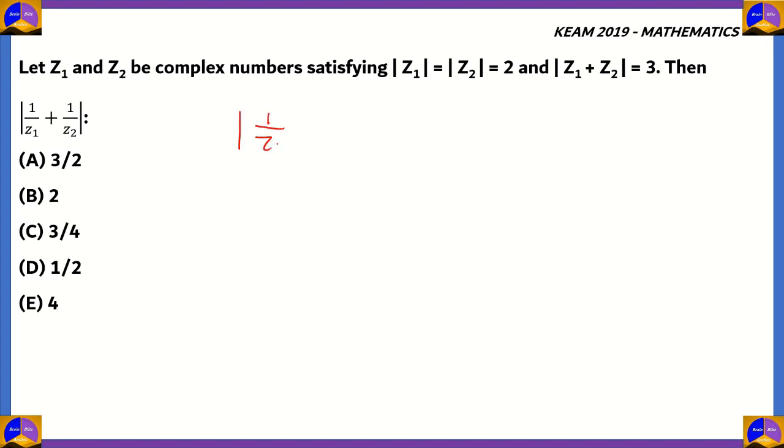Well, 1 by z1 plus 1 by z2 can be written as z1 plus z2 divided by z1 times z2. Basically, we took the LCM and multiplied the numerators in order to match the LCM. So, now, we got z1 plus z2 divided by z1 times z2 under that modulus.